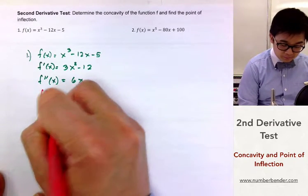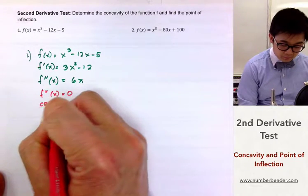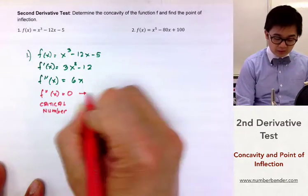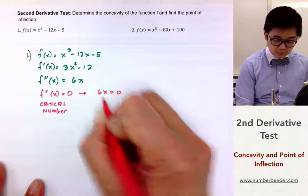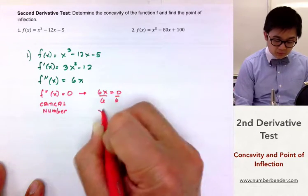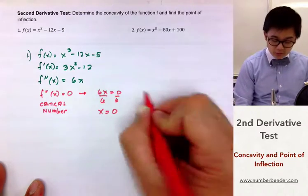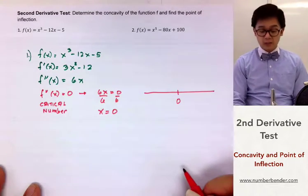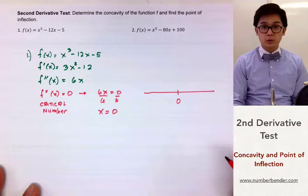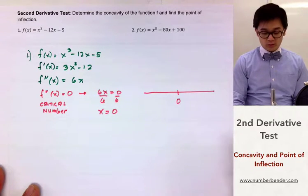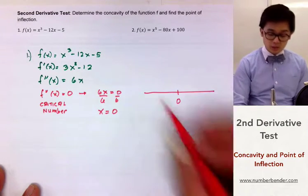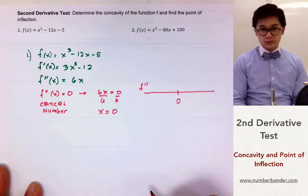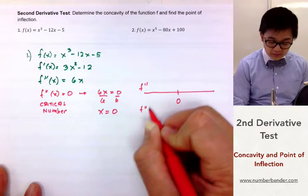Since we're using the second derivative test, we get our critical number from the second derivative by equating 6x to 0, so x is equal to 0. With this critical number we use our sign chart — but here the sign chart has a different purpose: not to determine local extrema or increasing/decreasing behavior, but to find the concavity and point of inflection using the second derivative.